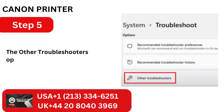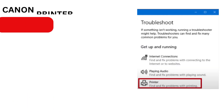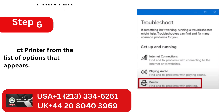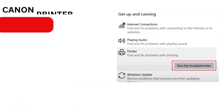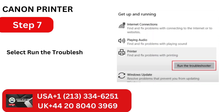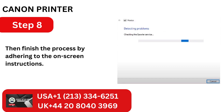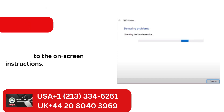Step 5: The other Troubleshooters option may be suggested on the screen. Step 6: Select Printer from the list of options that appears. Step 7: Select Run the Troubleshooter from the menu. Step 8: Then finish the process by following the on-screen instructions.